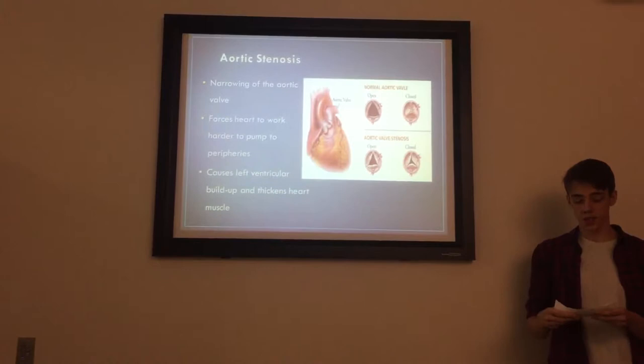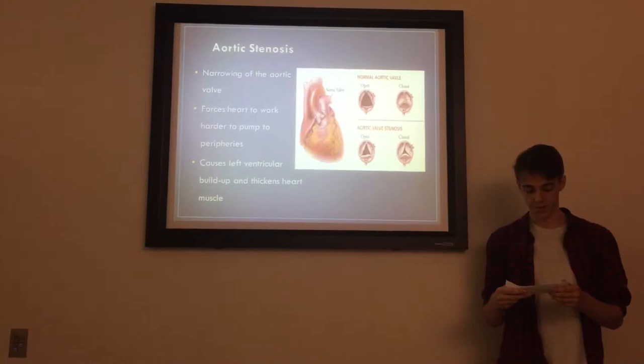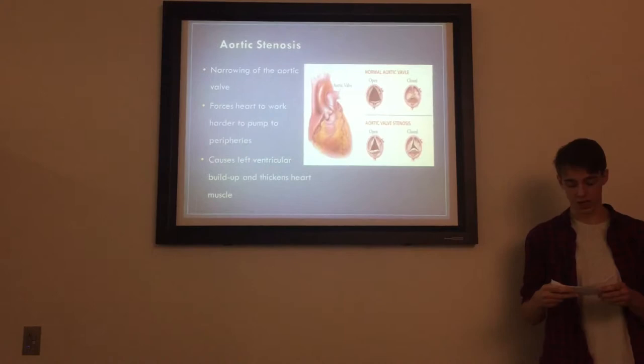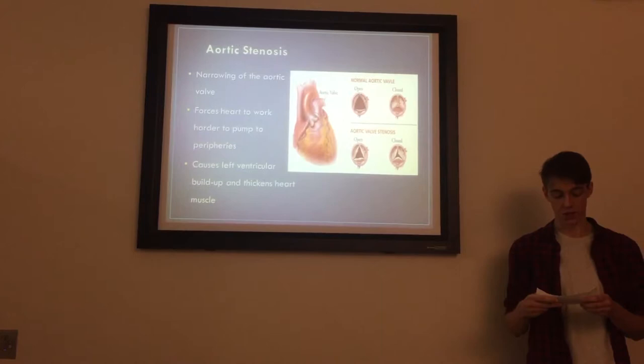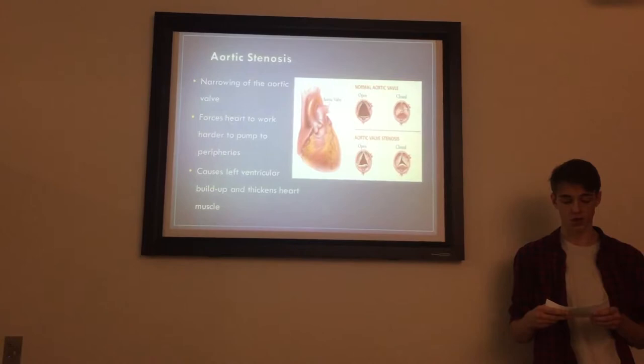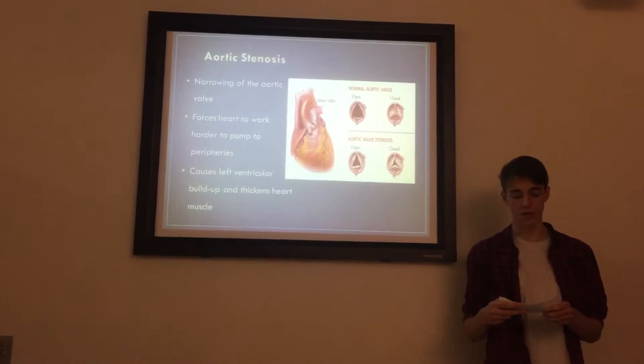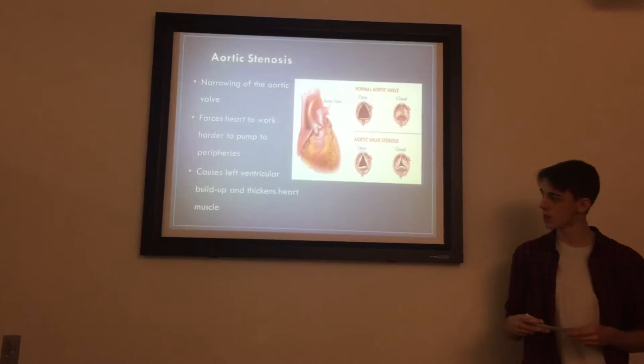Aortic stenosis is one of the primary valve diseases that affects the human heart, and is the narrowing of the aortic valve that leads from the left ventricle to the aorta. This narrowing is most often caused either by the build-up of scarring and calcification of and around the valve, or a malformation of the tricuspid valve, where two flaps are fused together, resulting in a bicuspid valve that further reduces blood flow. This blockage puts additional strain on the heart muscle, and over time leads to muscle swelling and eventually results in heart failure.